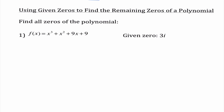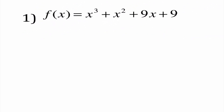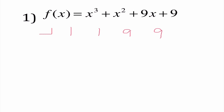Our final concept of the day: using given zeros to find the remaining zeros of the polynomial. It's telling us to find all the zeros and it gives us something. The nice thing about giving us a zero is it gives us a head start — we don't have to worry about trying to figure out different numbers. We know 3i is going to work, so I'm going to go ahead and set up our synthetic division. I'm going to space it out a little more than normal because I have this i that we're putting in.